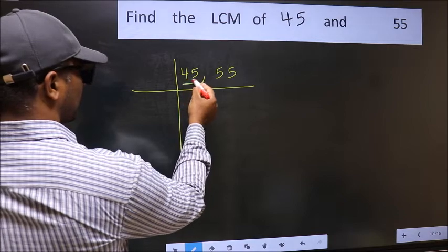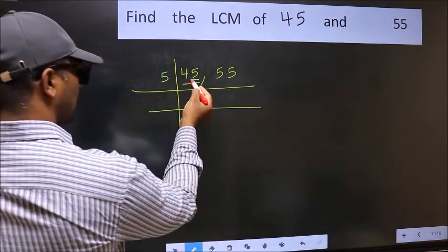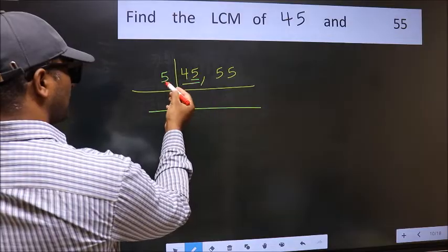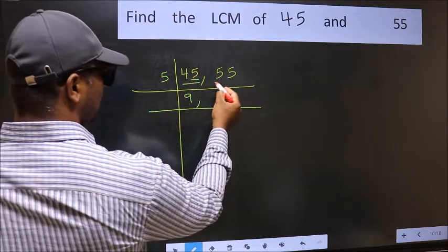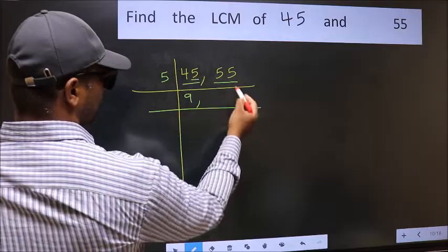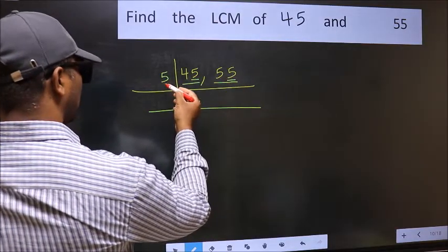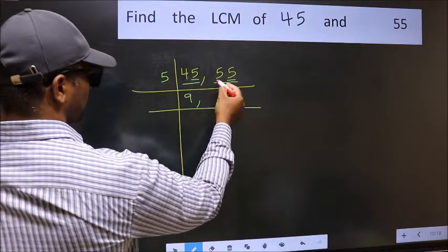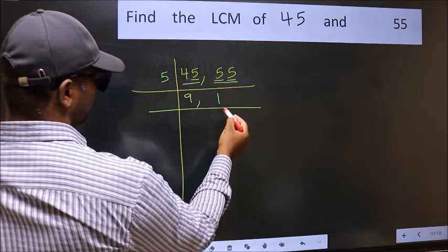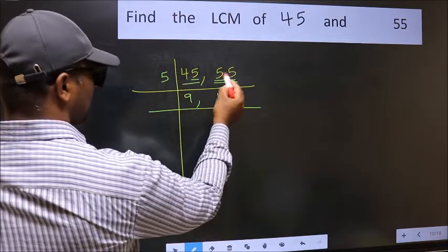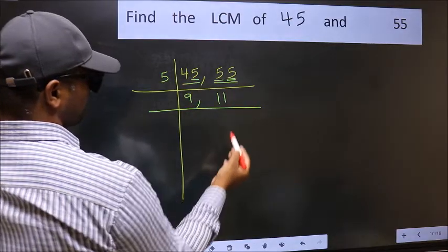In this number, the last digit is 5, so take 5. When do we get 45 in the 5 table? 5 nines are 45. The other number is 55 — last digit 5, so this number is also divisible by 5. 5 ones are 5, and 5 ones are 5. So dividing both by 5 gives us 9 and 11.